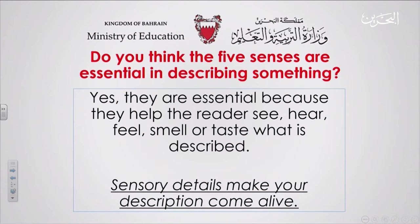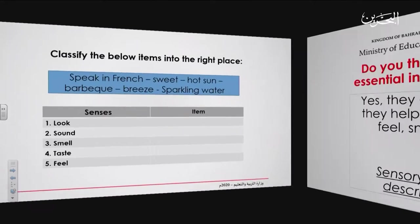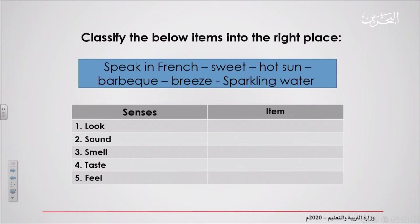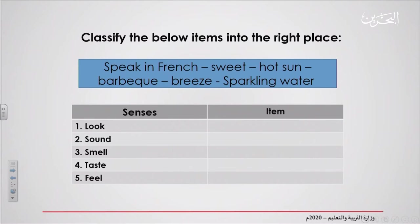Sensory details make your description come alive. For example, if you say 'the museum has magnificent views,' the reader will imagine it — the description comes alive. Now let's do a simple task together. I'll ask you to classify the items below into the right place. Look at the box — it has some words. Classify them according to the five senses: speaks in French, sweet, hot sun, barbecue, breeze, and sparkling water.